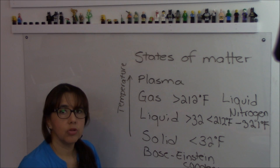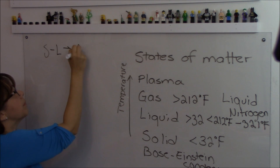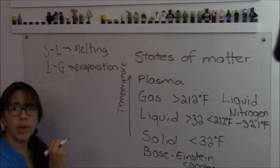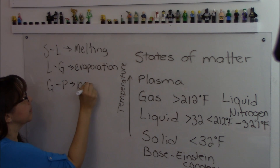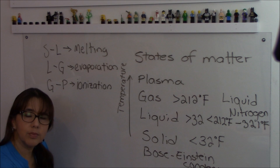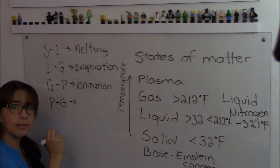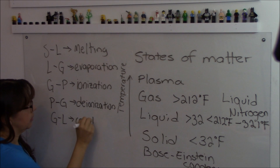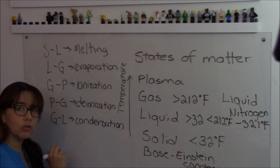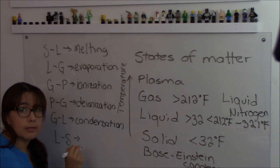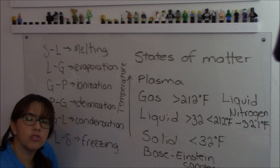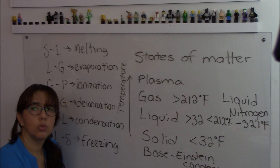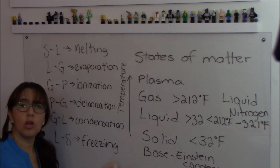Now let's look at phase transitions. Solid to liquid is melting — that's when ice becomes water. Liquid to gas is evaporation. Gas to plasma is ionization. Plasma to gas is deionization. Gas to liquid is condensation. Liquid to solid is freezing. Are these all the phase transitions? How about solid to gas and gas to solid? Solid to gas is sublimation, and gas to solid is deposition.